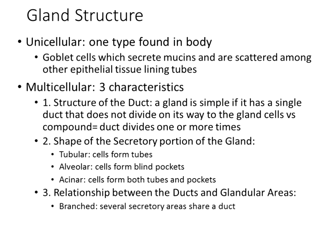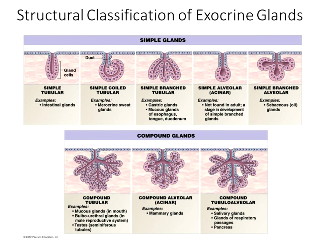Regarding gland structure: glands can be simple—a single tube or coil with a single duct exit—or compound, with a branched tree-like system of multiple tubes connecting into each other before reaching the duct. You should be familiar with gland structure but don't need to be an expert on it.